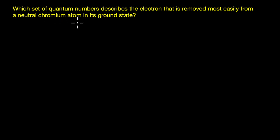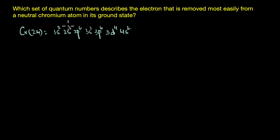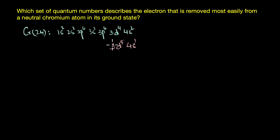The first thing we need to do is write down the electronic configuration of the neutral chromium atom. The atomic number of chromium is 24. You might be tempted to write a standard configuration, but actually the electronic configuration of chromium is 3d5 4s1. This is because half-filled d orbitals offer extra stability and lower the overall energy of the atom.